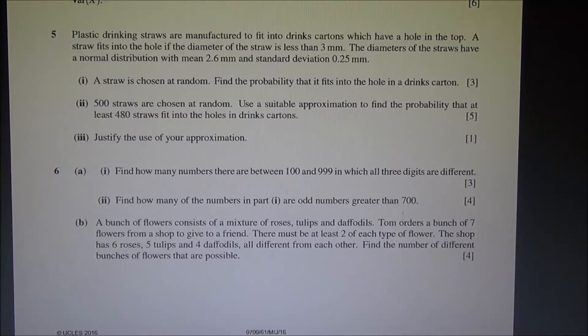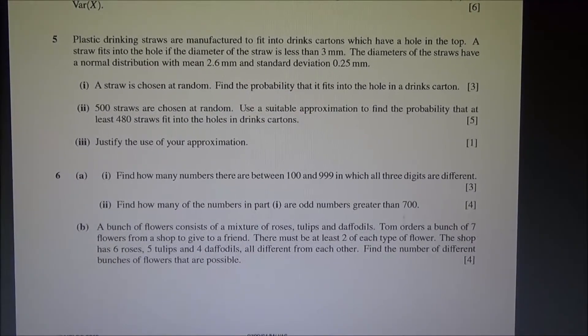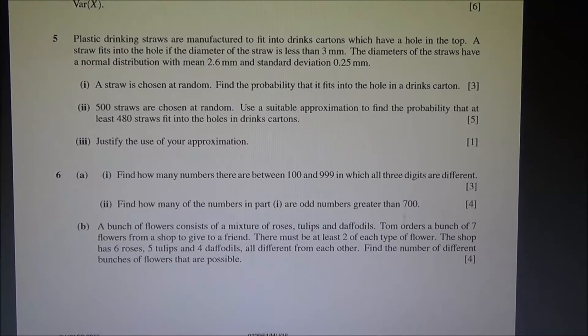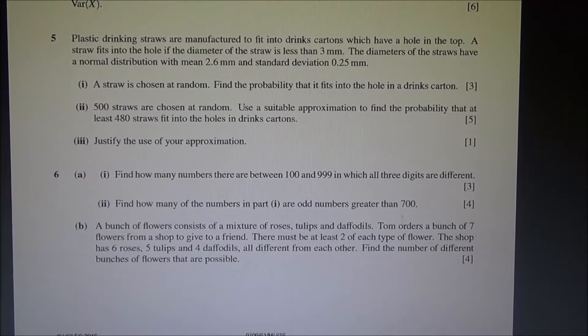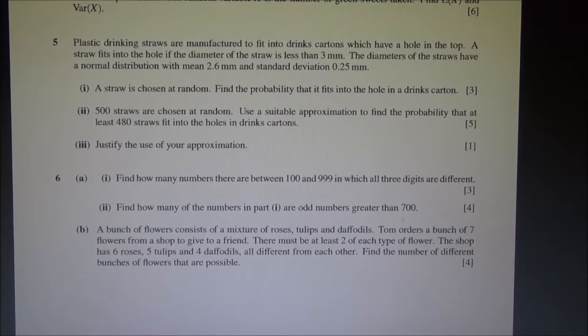For the second part, 500 straws are chosen at random. Use a suitable approximation to find the probability that at least 480 straws fit into the holes in drinks cartons. For the third part, justify the use of your approximation.